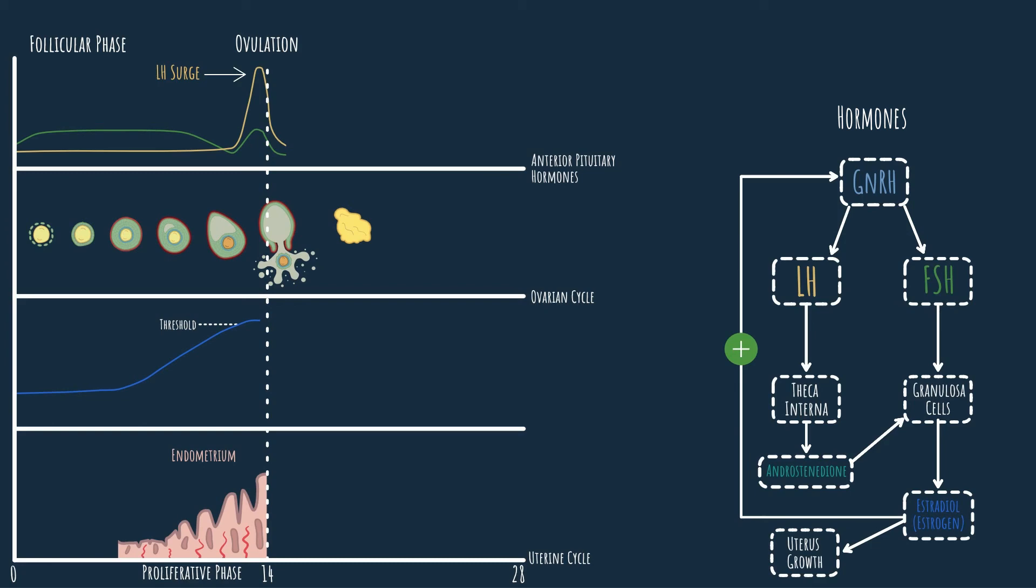We're nearly done with the follicle maturation and with the follicular phase. Before we continue, we just need to take one more look at estradiol. Notice that its levels take a nose dive as the corpus luteum forms. This happens because the granulosa cells that secrete estradiol have differentiated into lutein cells that form the corpus luteum. Now that we're officially done with the first 14 days of the menstrual cycle, let's do a quick recap.